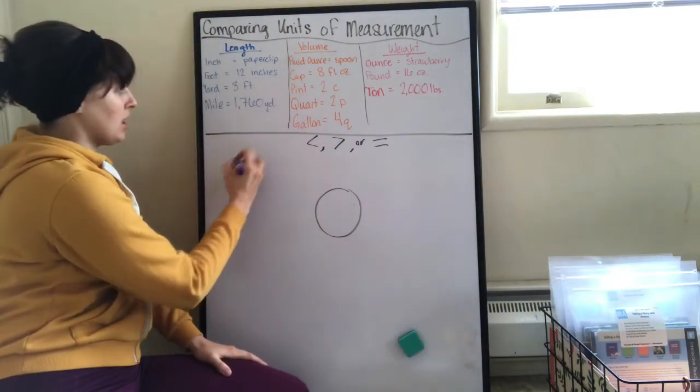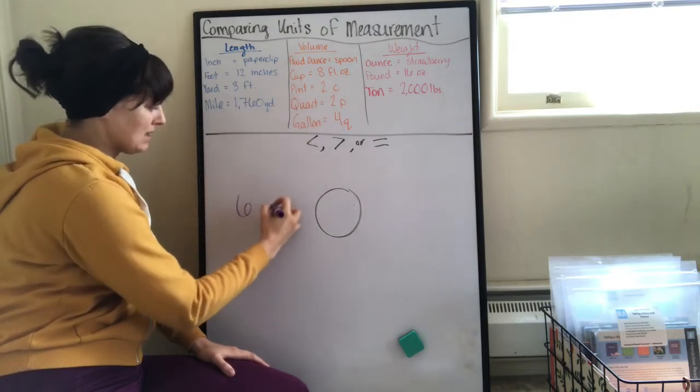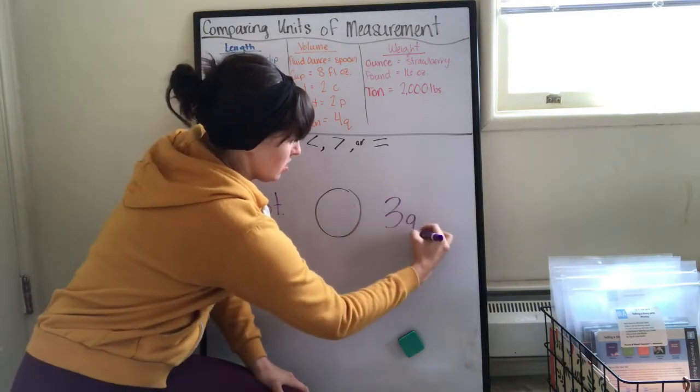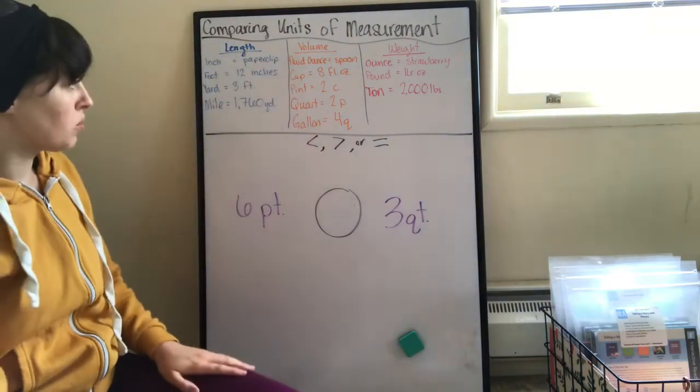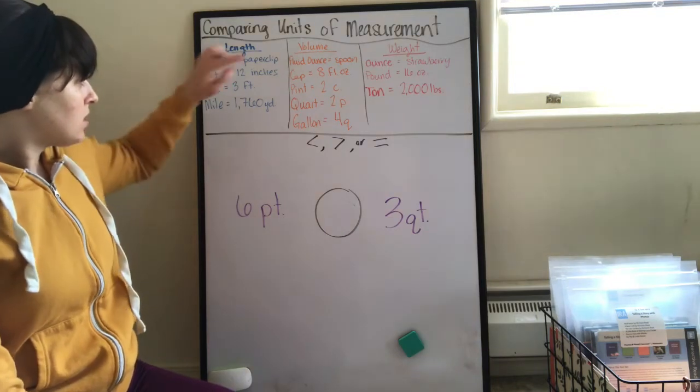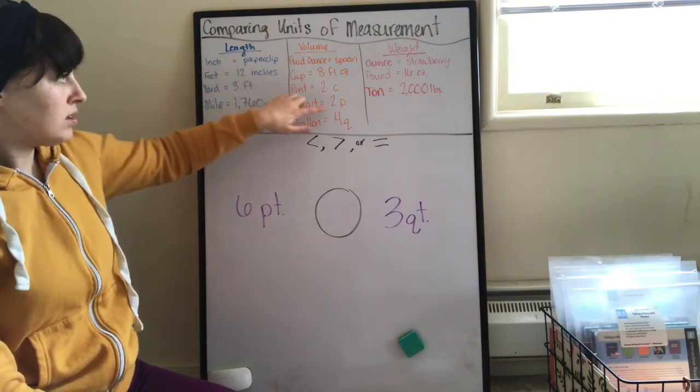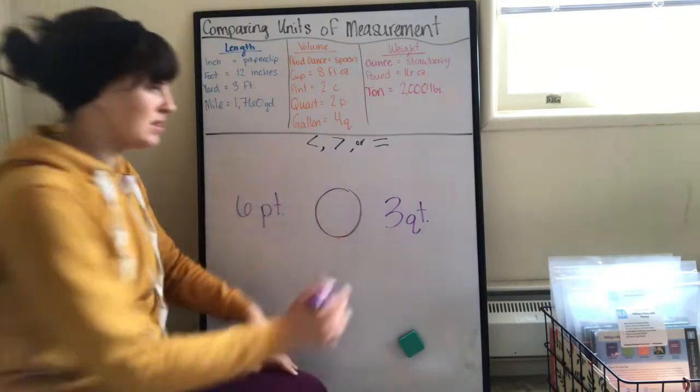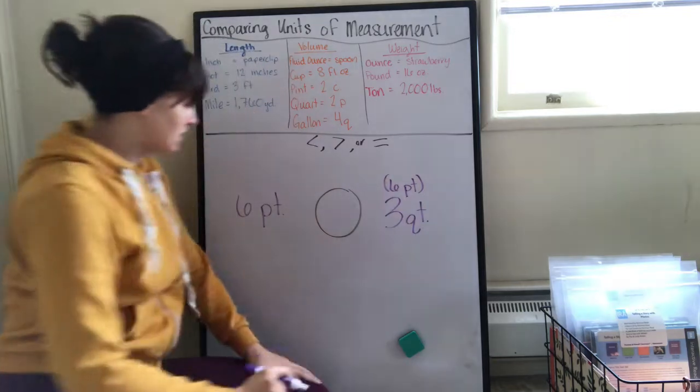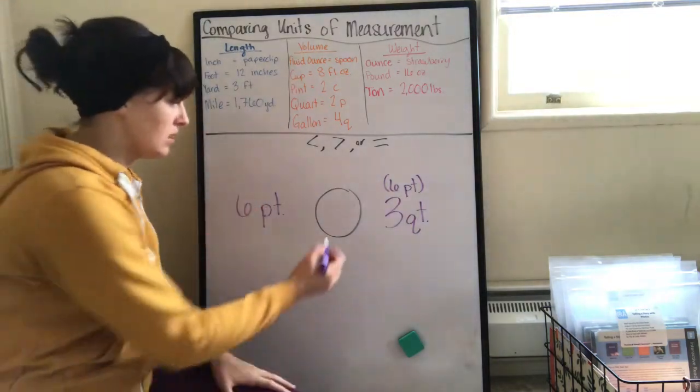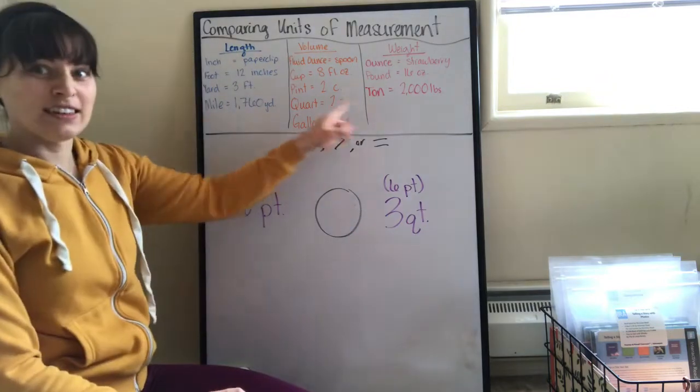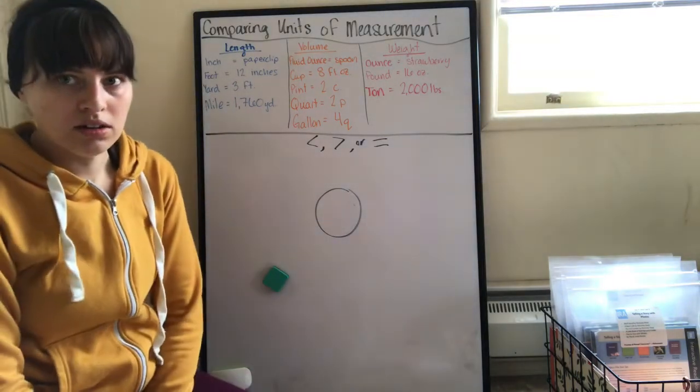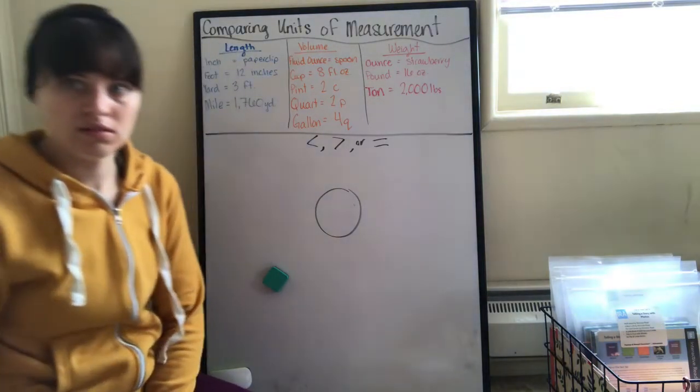Let's do a few more. We're going to switch it up, we're going to go to volume. Six pints and three quarts. Let's see, if I have a quart, each quart is two pints. Well three times two is six. Six pints or six pints, we have another one that's equal. This is why it's important to have something like this right in front of you.